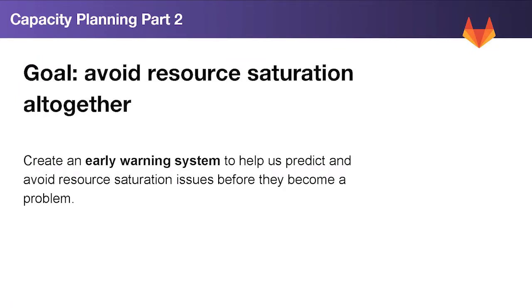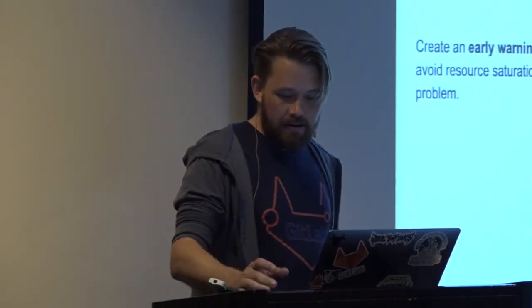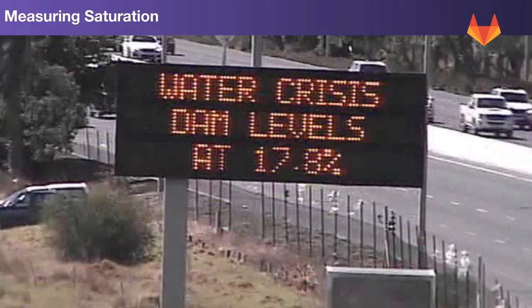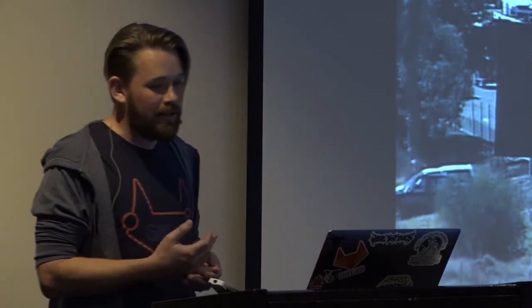With this in mind, we started thinking about what we could do to build an early warning system that would help us predict and avoid these resource saturation issues before they become a problem. The first step to avoiding resource saturation is to measure it. Once you can measure it, you can forecast it. And once you can forecast it, you can plan accordingly and make sure it doesn't happen in the first place.